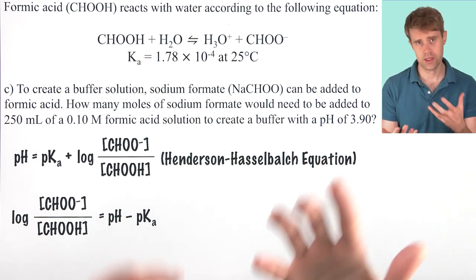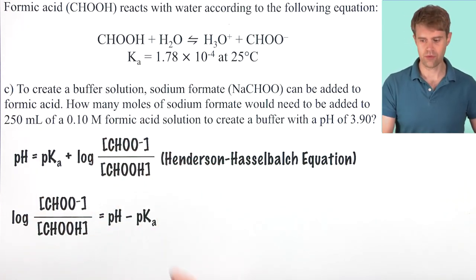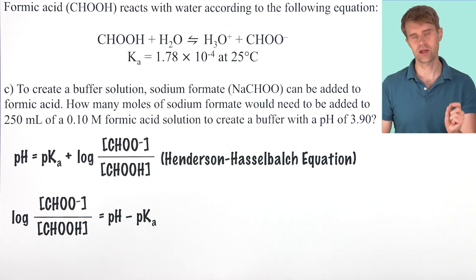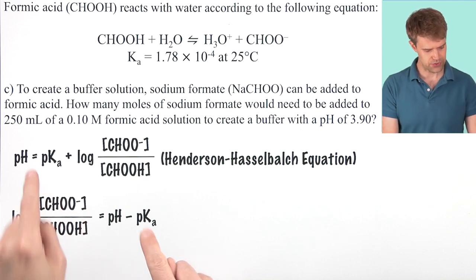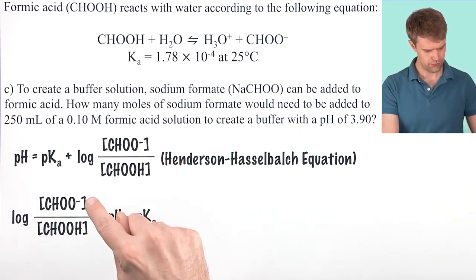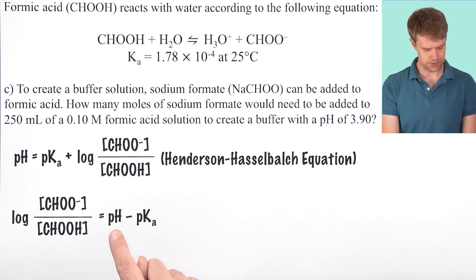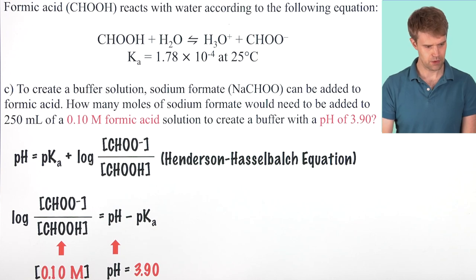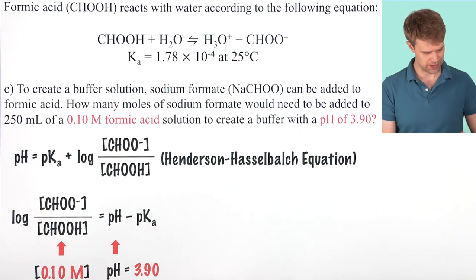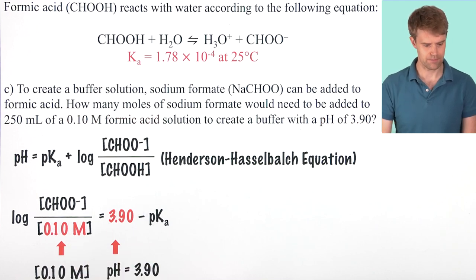There's a couple ways that we could rearrange this equation to solve for formate. And they're all equally valid. You can rearrange this equation however you like. We're going to take it slow. We're going to step by step here. And the first thing that we're going to do is we're going to subtract pKa from both sides, and then we'll just flip the equation here to make it a little easier. So, we get log formate divided by formic acid equals pH minus pKa. And right away, we can plug in a couple knowns. We know that the concentration of formic acid is this, and we know that the pH of the buffer is 3.90. So, we can go ahead and we can plug those values in. There they are.